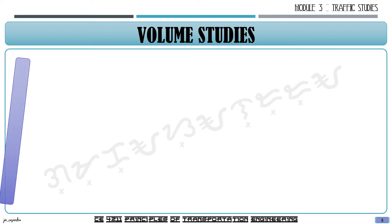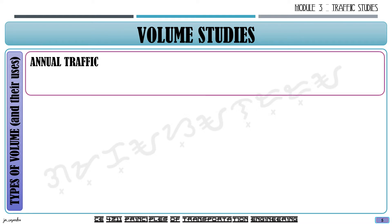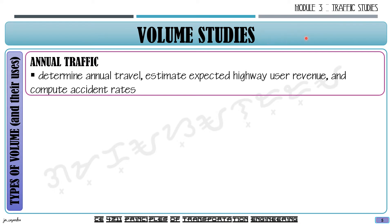Starting with the types of volume gathered in a volume study: the first is annual traffic, which is used to determine the annual travel of a section of highway. It is used to estimate expected highway user revenue and to compute accident rates — the volume used for computing accident rates from highway engineering is the annual traffic.